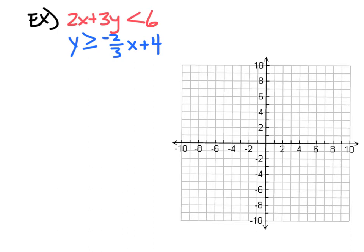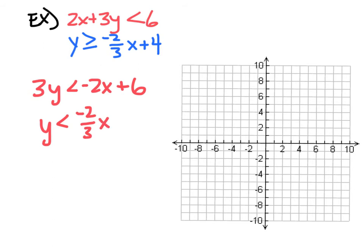Let's do one more example together. Here we have 2x plus 3y is less than 6 and y is greater than or equal to negative 2/3 x plus 4. For the first one, let's solve for y: 3y is less than negative 2x plus 6, divide by 3, so y is less than negative 2/3 x plus 2. Remember, if we had divided by a negative, we'd flip the sign. So I go up to 2, go down 2 over 3, and connect with a dashed line. Notice that y is greater than or equal to negative 2/3 x plus 4 has the same slope — these are parallel lines.